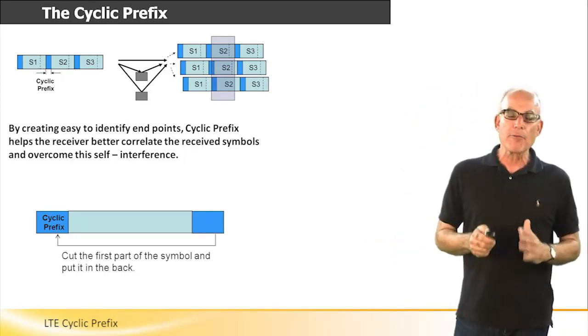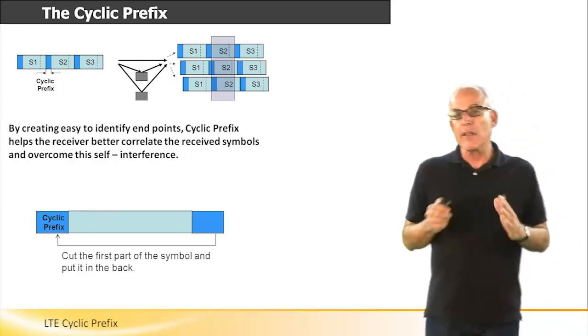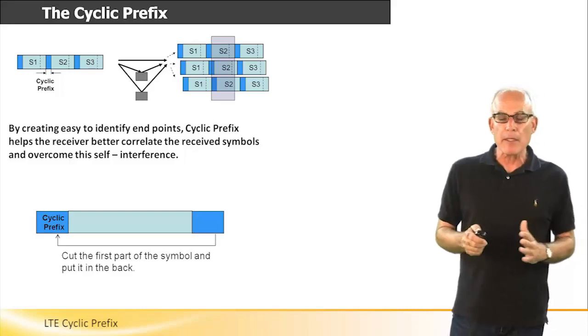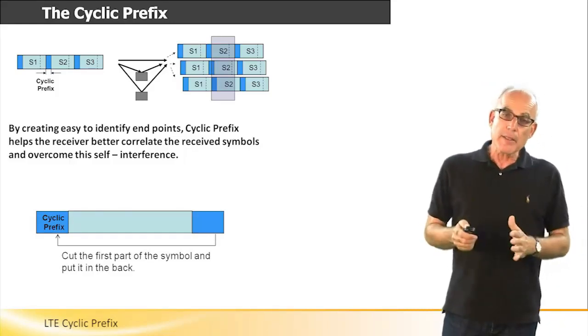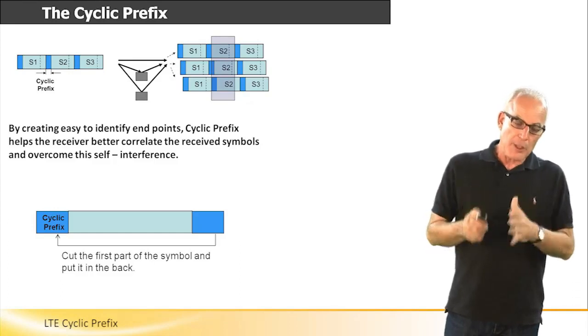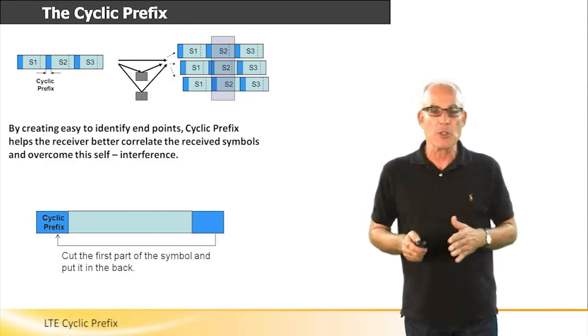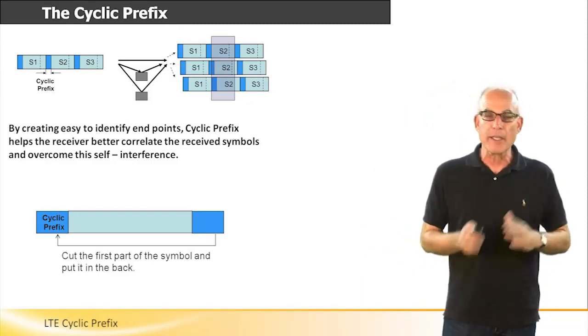The cyclic prefix has two elements. One is a guard band with duration in the magnitude of the delay spread. The other is the duplication from the beginning of the symbol to the end of the symbol.